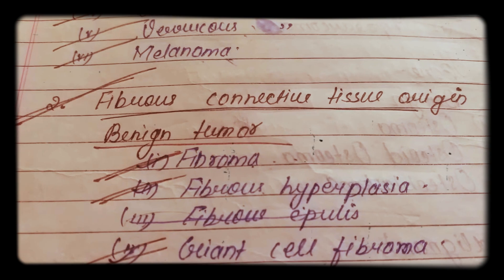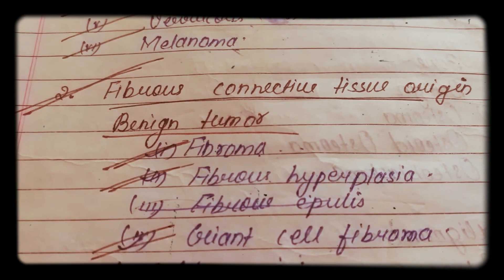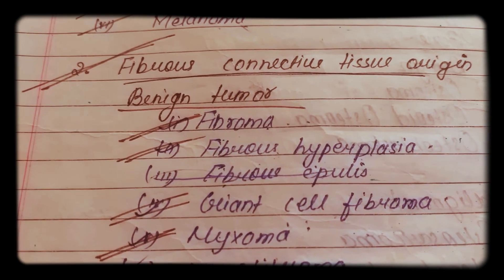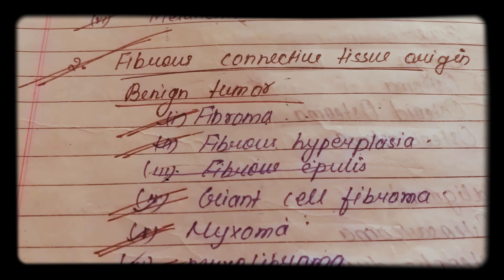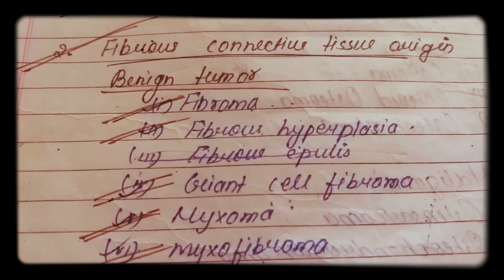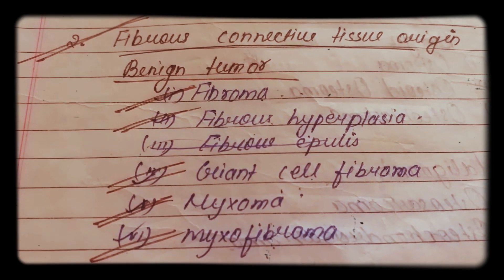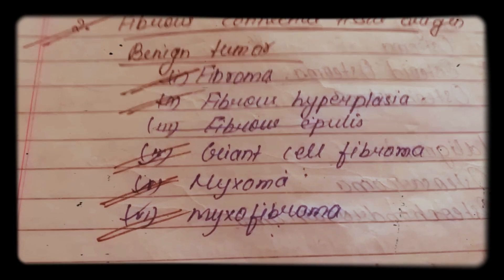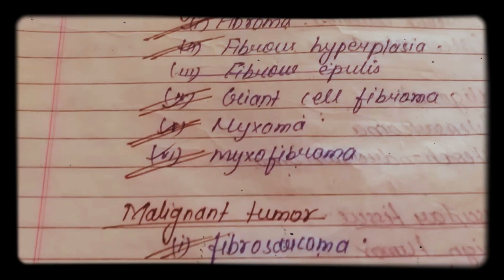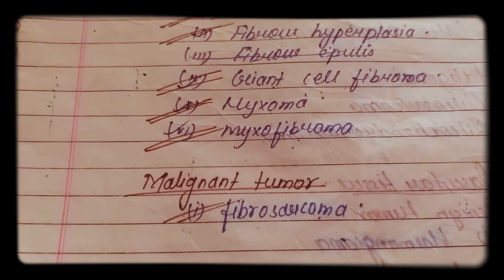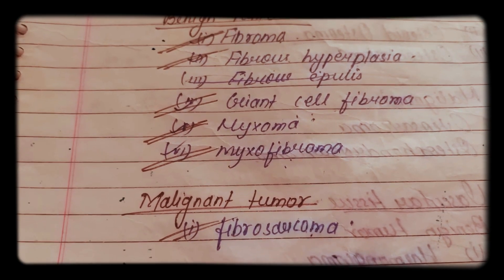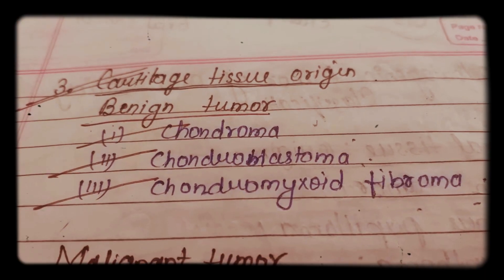The second type is fibrous connective tissue origin. It also includes benign and malignant tumors. Benign tumors include fibroma, fibrous hyperplasia, fibrous epulis, giant cell fibroma, myxoma, and myxofibroma. Malignant tumors include fibrosarcoma.